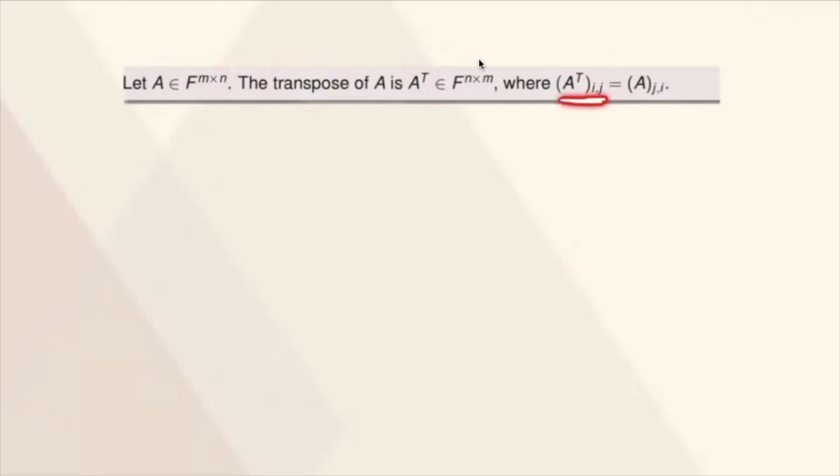So kung titingnan mo, ang size ng A is M by N, tapos ang size naman ng transpose is N by M. So para siyang nabaliktad. And you also have the hint that the IJ entry is the JI entry of the original. So ibig sabihin nito, parang nag-swap ka lang. So parang tinagpalit mo yung row at yung column.